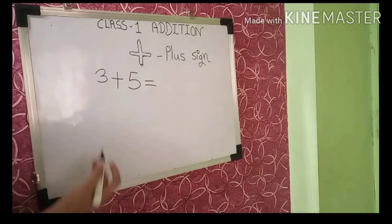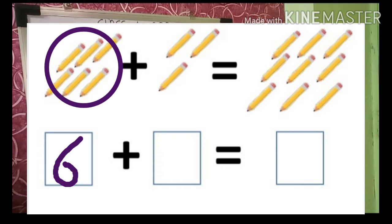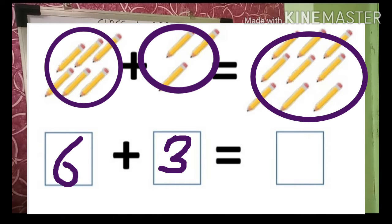Now let us look at pencils — a set of pencils. Let us count and write the number of each set. In the first set we have six pencils, and in the second set three pencils. Six plus three — how many pencils? We are getting nine pencils. So six plus three is equal to nine.